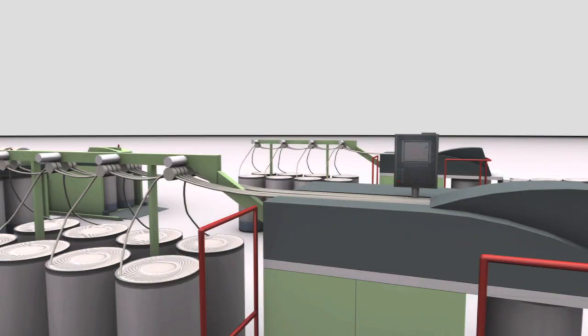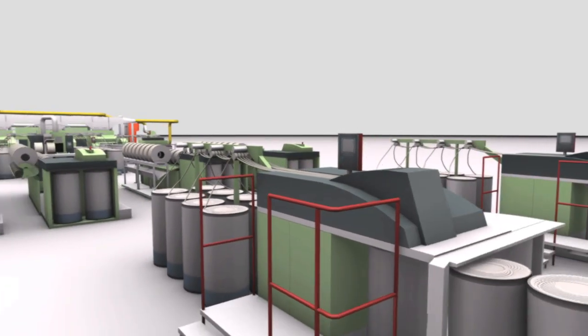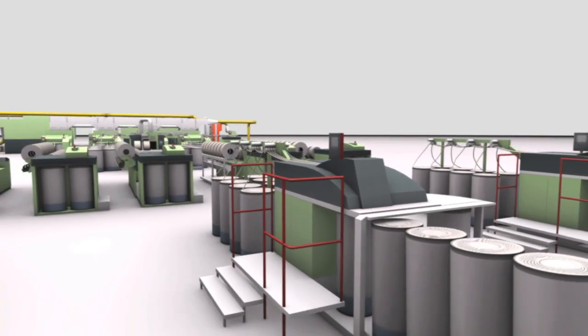The slivers of all combers are fed to the auto-leveler draw frame, which compensates thick and thin places.